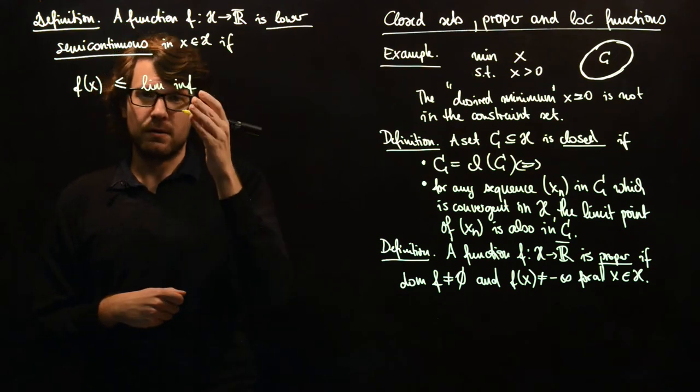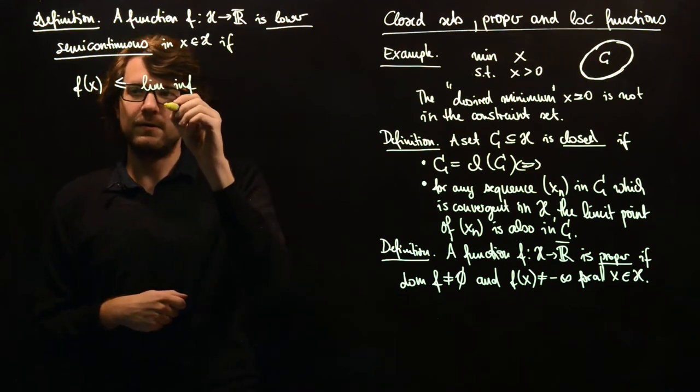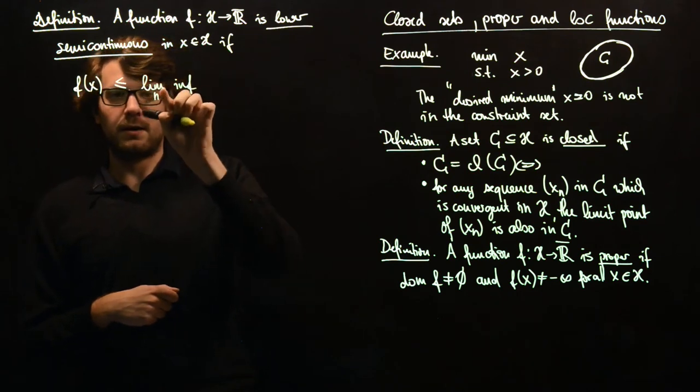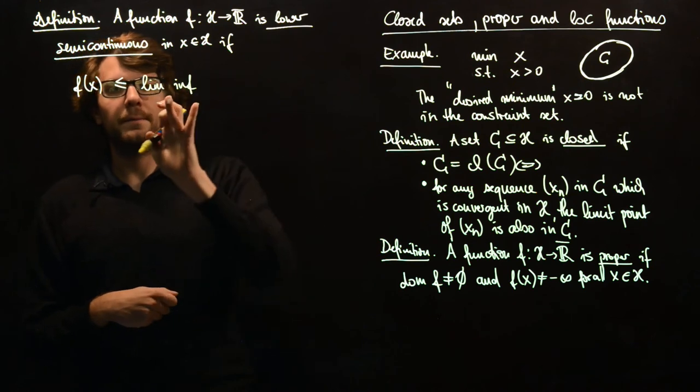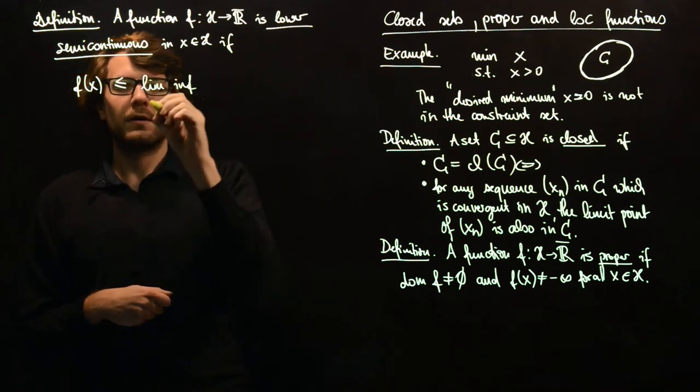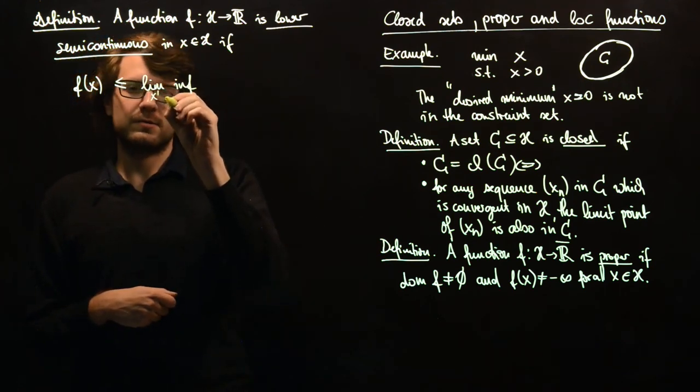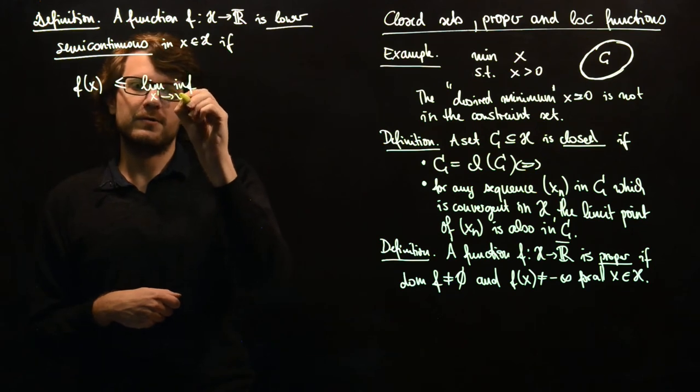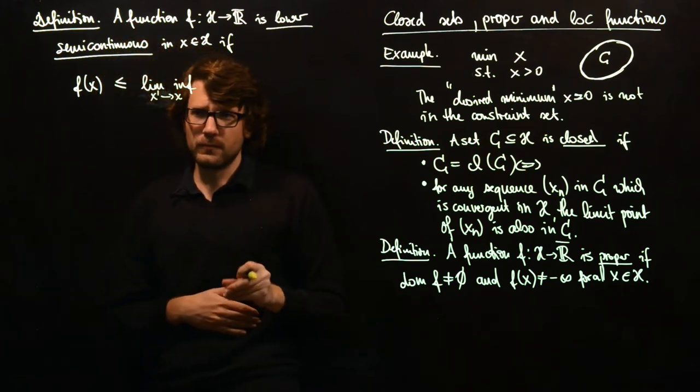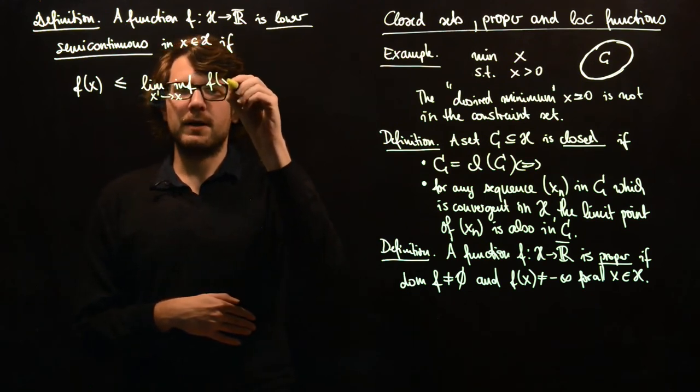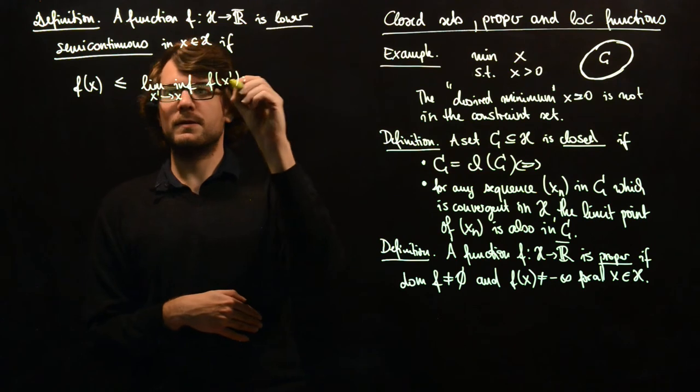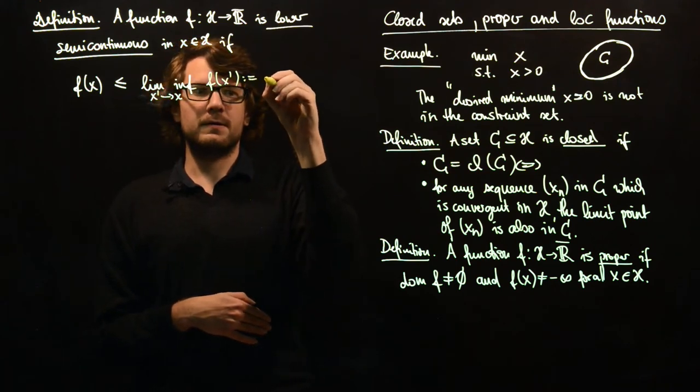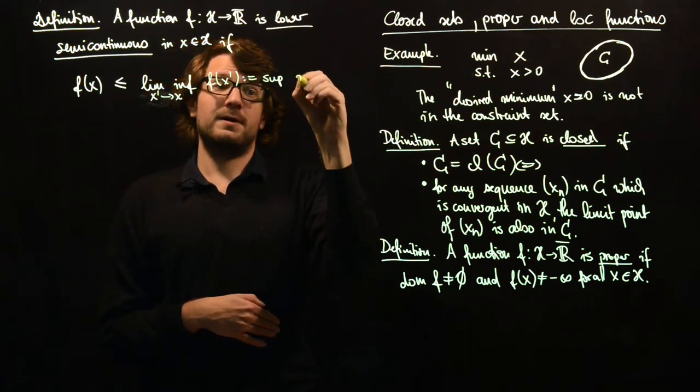The way to express this is to take the limit, the lower limit, limits inferior, and we don't take n here. We take just the point x prime converging to x, f of x prime. And now I should define what this is, this is the sup inf.